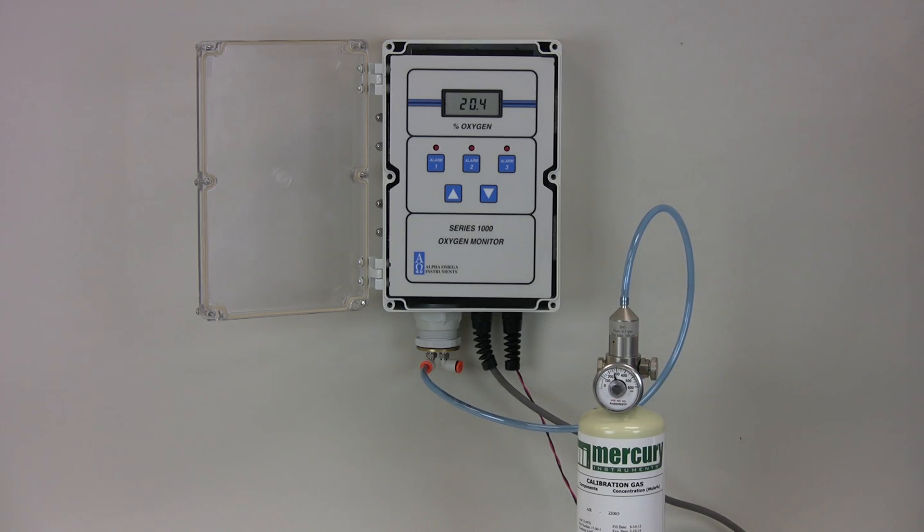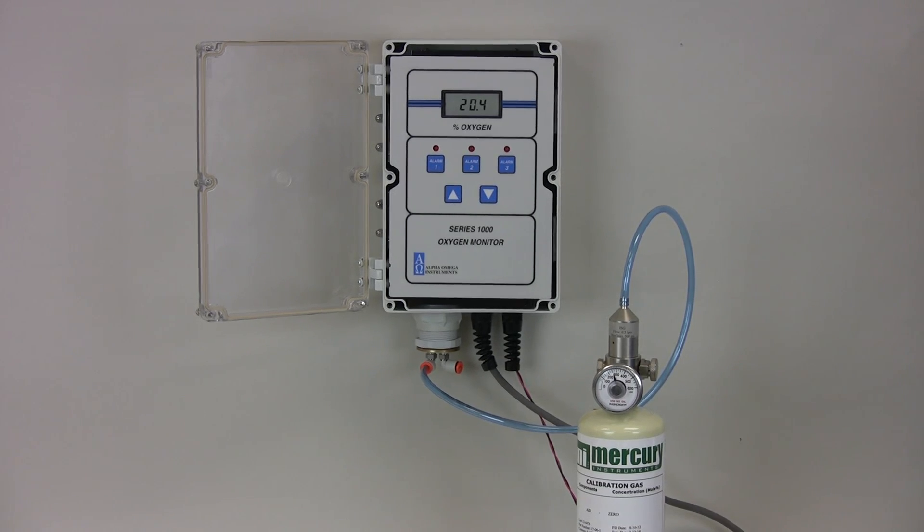This tank has a flow control that is set to 1.5 liter per minute. As the sensor responds to the compressed air sample, the display produces a reading of 20.4%, which verifies the need for calibration. Now the monitor is ready to calibrate.